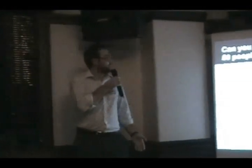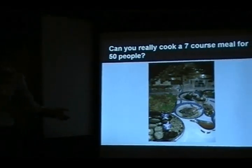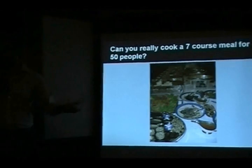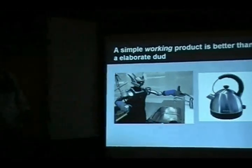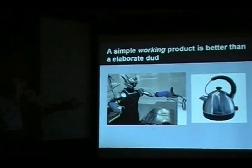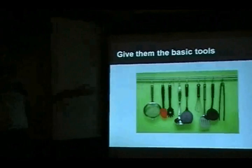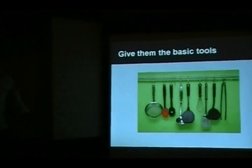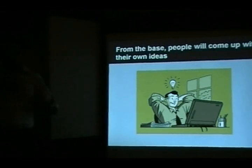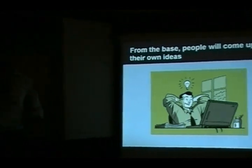If we're just starting out, are we already extending ourselves? Can we really cook a seven-course meal for 50 people? The key thing is not to promise too much. A simple working product is better than something elaborate. If someone asks how to boil water, do we want to give them a robot, or just offer them a kettle? We don't need to get too technical too quickly. We've got to give people the basic tools — the wooden spoon, the ladle — and teach them how to stir. If we give people the ground knowledge, in my experience, they come up with their own ideas, and that's going to be better work for us.